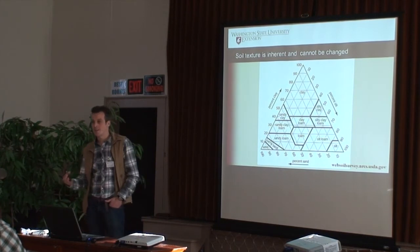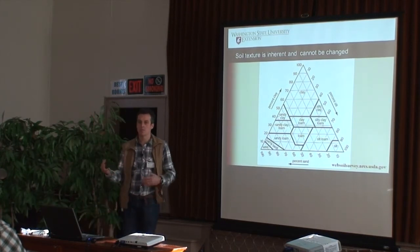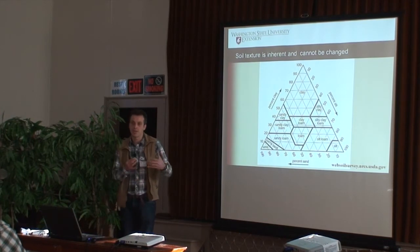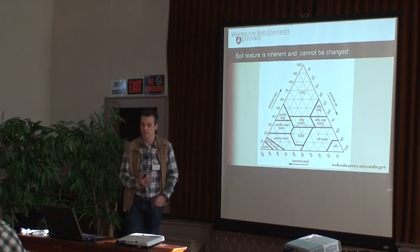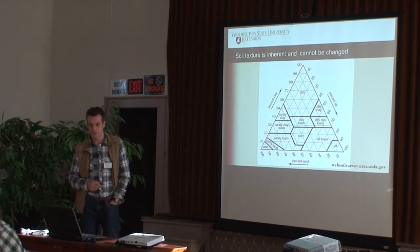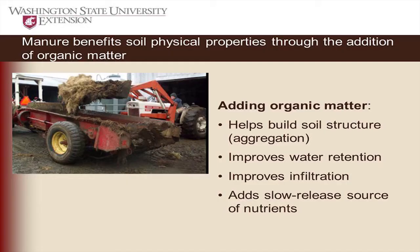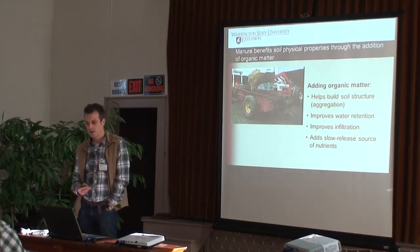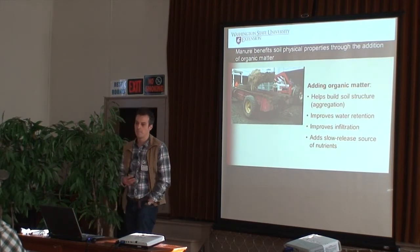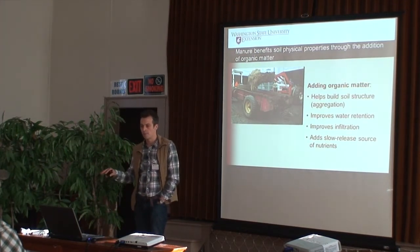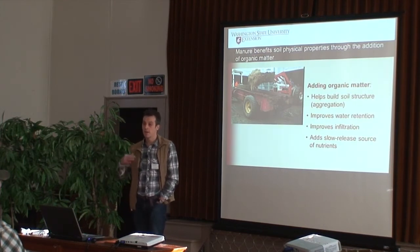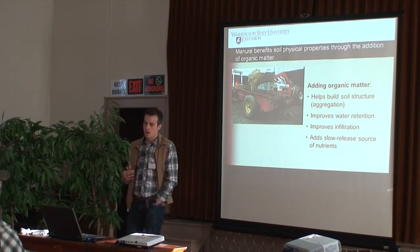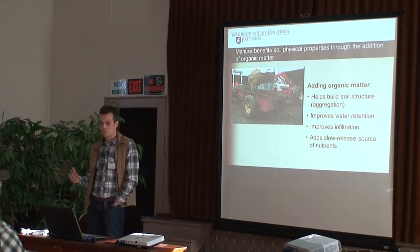Soil texture is an inherent soil quality property — some soils are going to be managed differently just because of it, and there's not a lot you can do to change your soil texture. Organic matter is important for many reasons. Nicole already mentioned how manure and organic matter plays into the availability of nitrogen and other nutrients. Organic matter also affects the physical properties of soil.